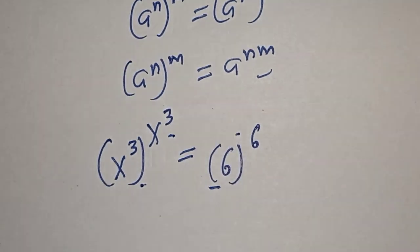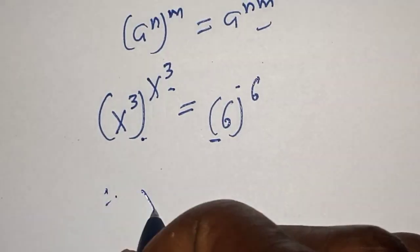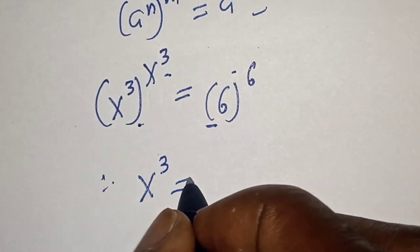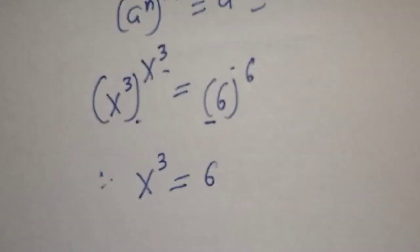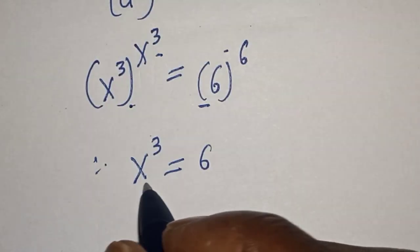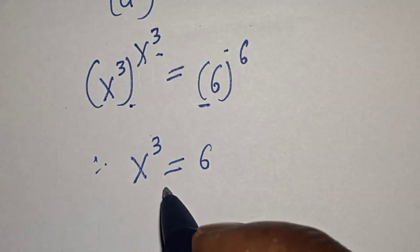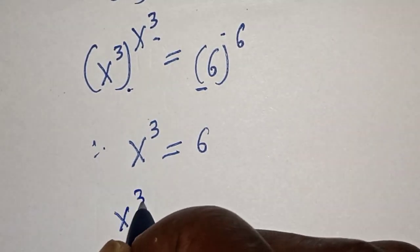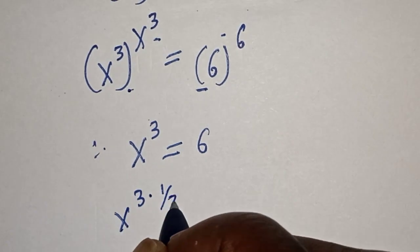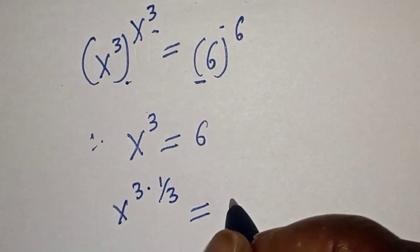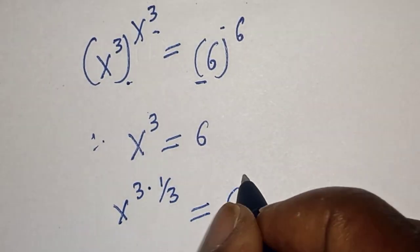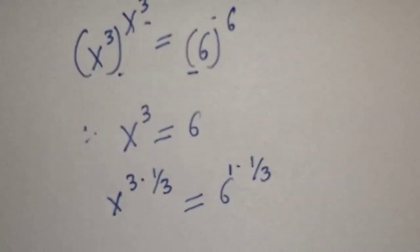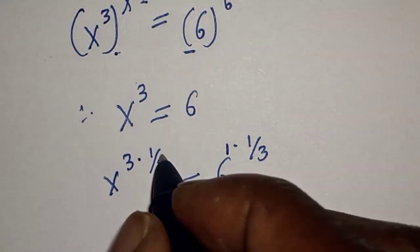Therefore s raised to power 3 is equal to 6. Now let's multiply the power of both sides by 1 over 3. We have s raised to power 3 multiplied by 1 over 3 is equal to 6 raised to power 1 multiplied by 1 over 3, because this is also raised to power 1, so this will cancel this.